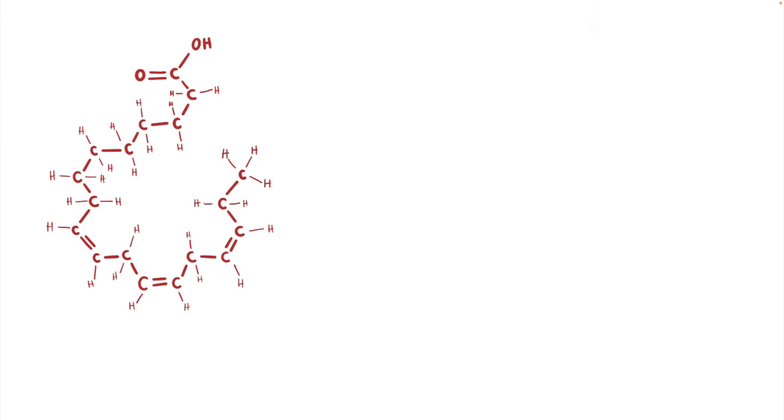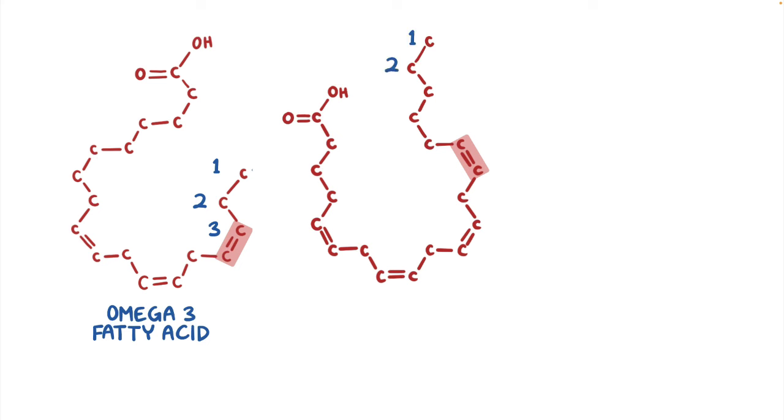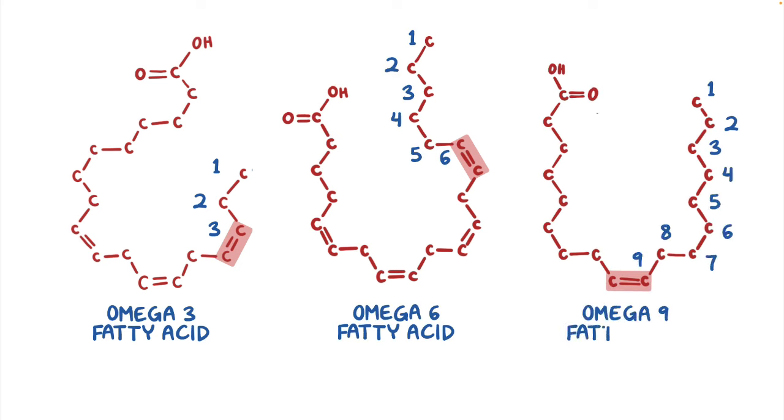Also they can be classified according to their location as well. Since all these hydrogens can get kind of crazy looking, we'll just take them away for now. So another name for the methyl end is the omega end, and then we can count the number of carbons until the first double bond. Since this one is three, it would be an omega-3 fatty acid. If the double bond is six carbons from the end, it's an omega-6, and if it's nine carbons from the end, it's called omega-9.